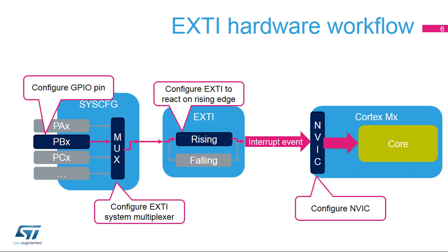The third step consists of enabling the adequate edge detector for the EXTI line. The EXTI controller is capable of generating an interrupt on a rising edge, falling edge, or both edges on an EXTI line transition. The last step involves enabling the interrupt line in the CPU nested vectored interrupt controller, or NVIC, to generate an interrupt as soon as the EXTI controller raises its interrupt event.